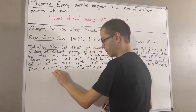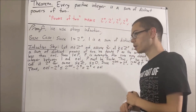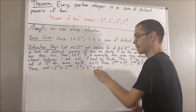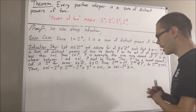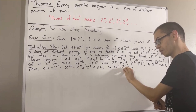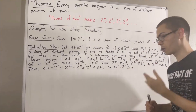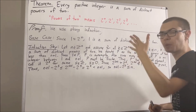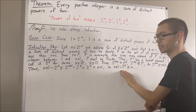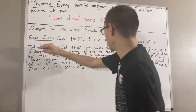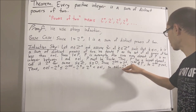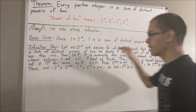Now, n plus one minus two to the s and n plus one are both integers. So to say that n plus one minus two to the s is less than n plus one is equivalent to saying that n plus one minus two to the s is less than or equal to n. So we can apply our induction hypothesis to n plus one minus two to the s, because our induction hypothesis works for every positive integer less than or equal to n.